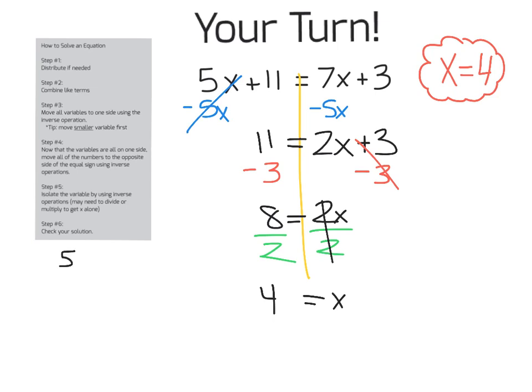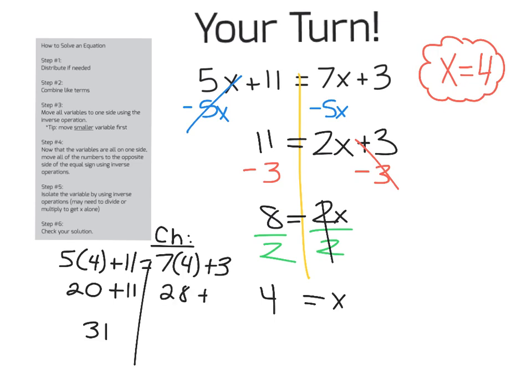To go ahead and check my answer, I have 5 times 4 plus 11 equals 7 times 4 plus 3. And I'm just going to label this as my check. And I have 20 plus 11. That's 31. And I want to see if that's equal to 28 plus 3. And it is. The left side equals the right side. So, my answer checks.